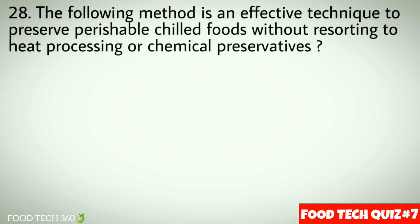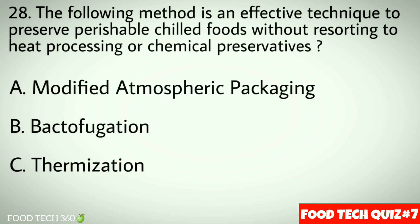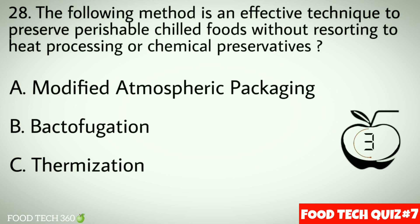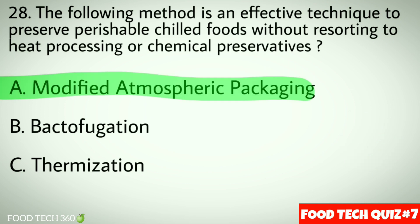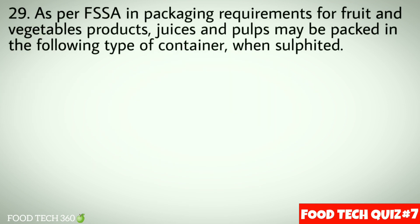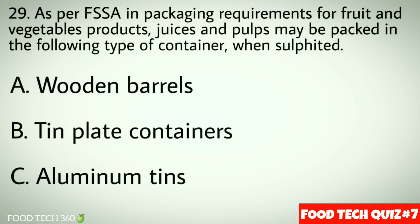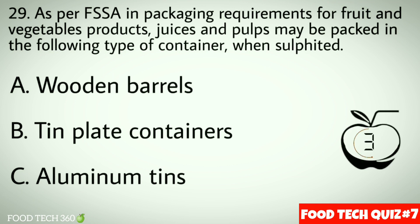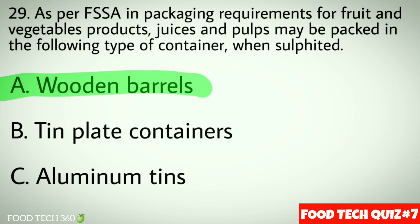Question number 28: The following method is an effective technique to preserve perishable chilled foods without resorting to heat processing or chemical preservatives — options: a) Modified Atmospheric Packaging, b) Bacterification, c) Thermization. Correct answer: a) Modified Atmospheric Packaging. Question number 29: As per FSSA, in packaging requirements for fruits and vegetables products, pulses may be packed in the following type of container when sulfited — options: a) Wooden barrels, b) Tin plate containers, c) Aluminum tins. Correct answer: a) Wooden barrels.